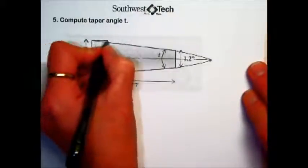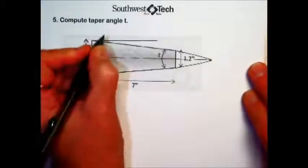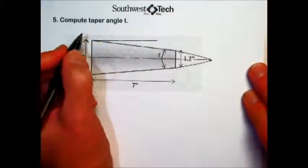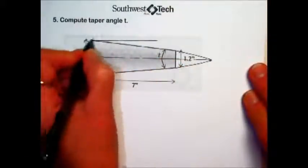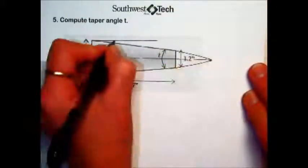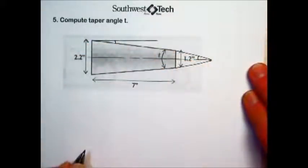So if I draw a line here, and if you remember a geometry principle, if you have parallel lines cut by a third line, we have alternate interior angles are equal.